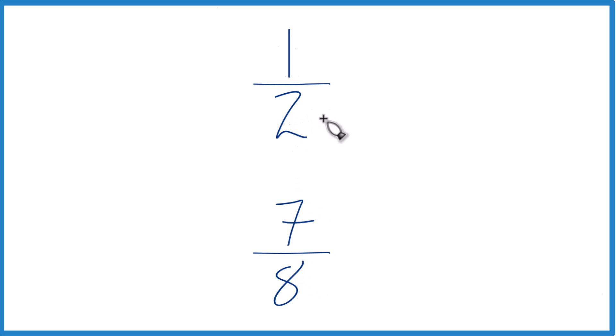The other way to do it is find a common denominator, something that two and eight both go into evenly, because then we could just compare the numerators.